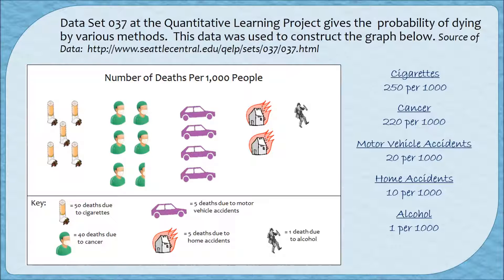The homes also represent 5 deaths per image, giving only 10 per 1,000. The drinking gentleman represents only 1 death, so there's only 1 per 1,000. So what we thought was that alcohol would be half as much as homes — but it's actually a tenth as large. To display this appropriately with pictures, each picture must represent the same number of deaths, and all pictures should be approximately the same size, since the area principle is also at play here.